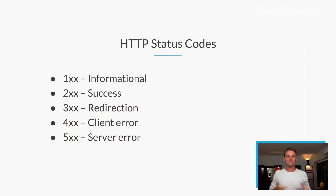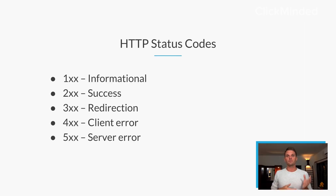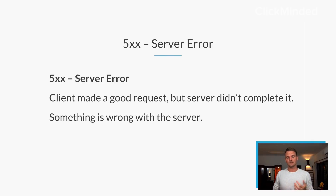The 100 block - these are informational requests. The 200 block - those are successful requests. The 300 block is going to be for redirects. The 400 block will be for client errors, and the 500 block will be for server errors. That means the client made a good request, but the server didn't complete it - something is wrong on the server side.